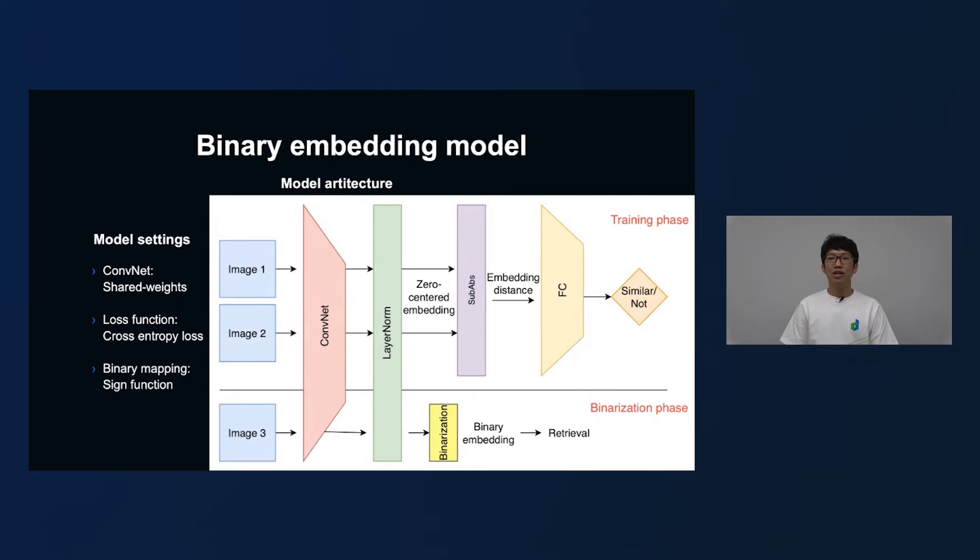After the model has been trained, we obtain the binary codes as follows. First, the image will be passed through the CNN network and layer norm to obtain zero-center embedding. And the binarization layer will be just simply a sign function. We transform the zero-center embedding into the binary embedding. And the binary embeddings just be used for the retrieval tasks. So that's basically our model for binary embedding learning.